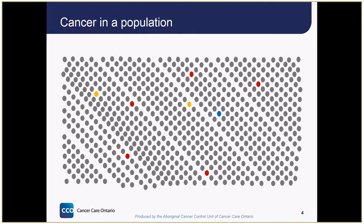Let's imagine all these dots represent a group of people or a population. A population doesn't necessarily mean the population of a whole country — it just means the group of people we're looking at, such as members of a community, people who do a certain job, or a group of patients who are part of a cancer study. At any time in a population, most people will not have cancer. Looking at a group of a thousand people, we would only see a few cancer cases.